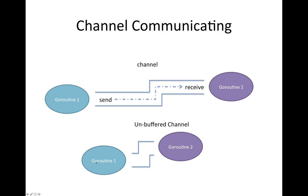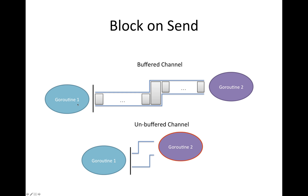That's why we can't really play with unbuffered channels right now, because we only have one goroutine — our main function. What is blocking on send? Even with a buffered channel, if you keep sending, eventually the channel might get full because goroutine2 is busy and can't receive fast enough. When goroutine1 tries to send again, it gets blocked — suspended from executing — because the buffer is full.